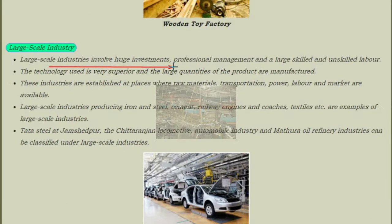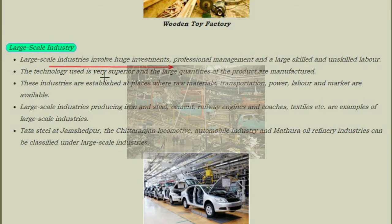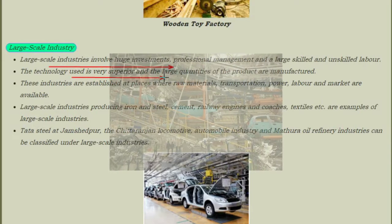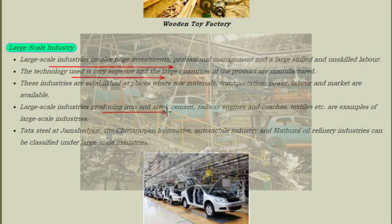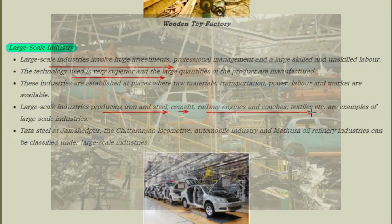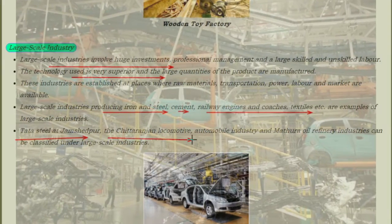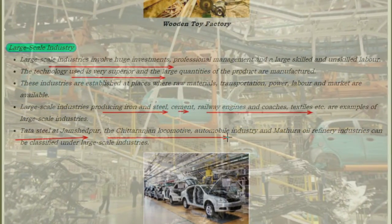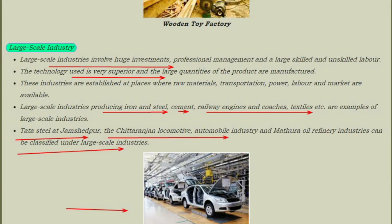Large scale industries involve huge investments, professional management, and large skilled and unskilled labor. The technology used is very superior and large quantities of products are manufactured. Large scale industries producing iron and steel, cement, railway engines and coaches, textiles, etc. are examples. Tata Steel at Jamshedpur, the Chittaranjan Locomotive and Automotive Industry, and Mathura Oil Refinery are examples of large scale industries. Here is an image showing an automobile industry, which is an example of large scale industry.